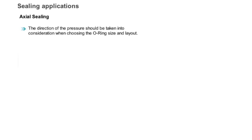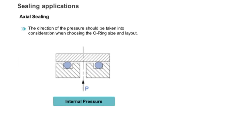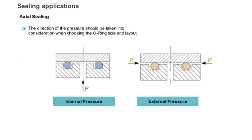In axial sealing applications, the direction of pressure is important for a proper O-ring layout. Internal or external pressure is simply equivalent to a pressure difference between the inside and the outside of the axial seal housing.